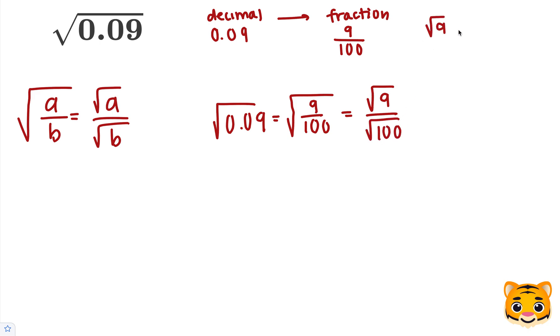The square root of 9 is equal to 3, because 3 squared is equal to 9. We can then rewrite the square root of 9 as 3. The square root of 100 is 10, because 10 squared is equal to 100.